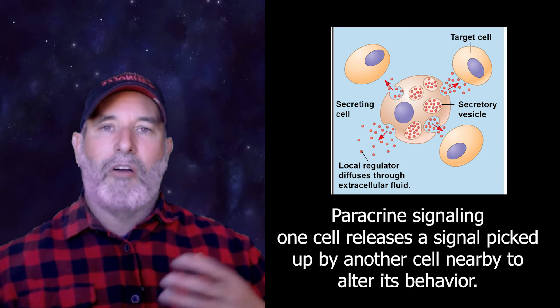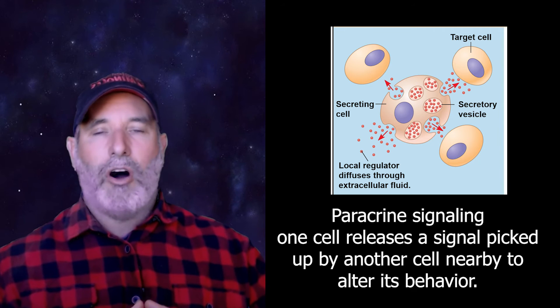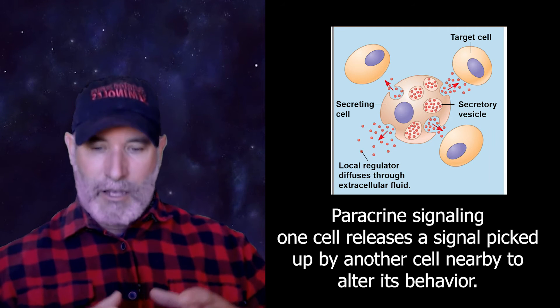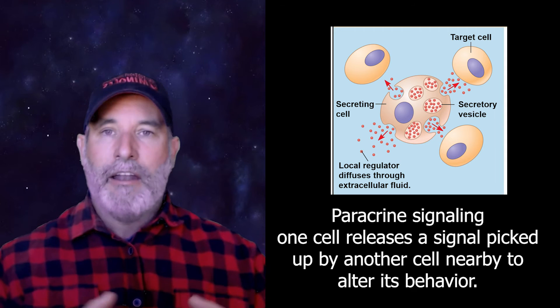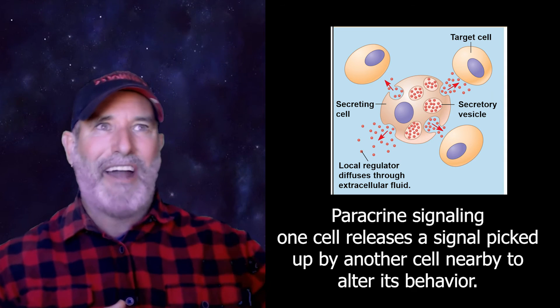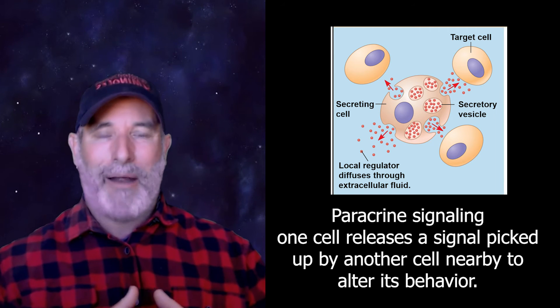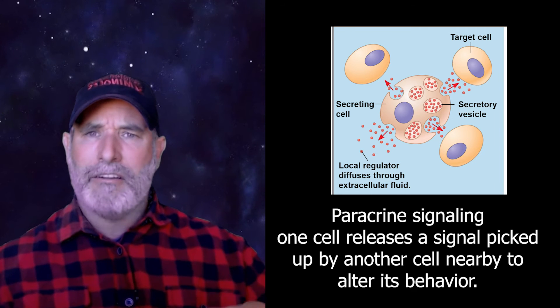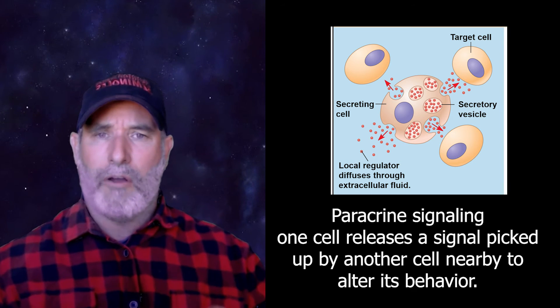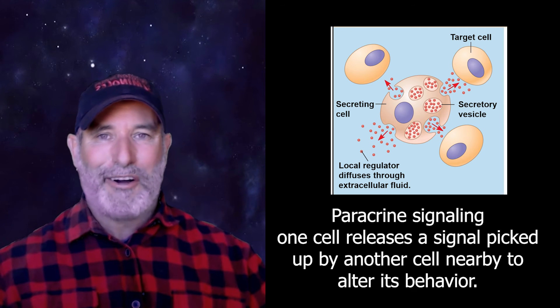Now, when these cells are communicating with each other like this, and they're just right next to each other, this is called paracrine signaling. This is two cells communicating to each other adjacently. Now, there's autocrine signaling as well. And that's just when one cell is sending out a signal, receiving its own signal and responding to it. But the paracrine signaling is just adjacent cells talking to each other. And in the next chapter, we'll talk about, or in the next video, we'll talk about endocrine signaling cells talking to each other over long distance.